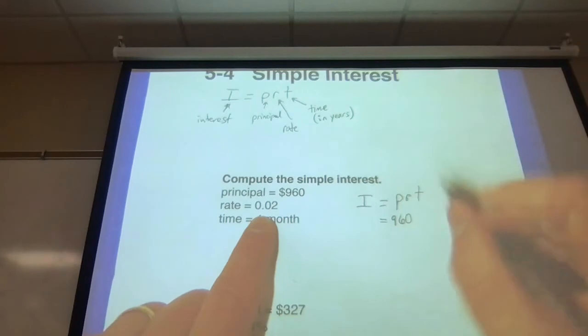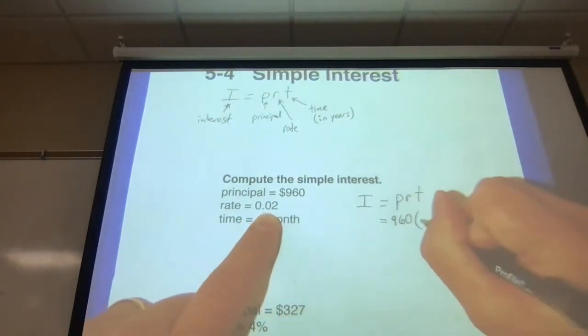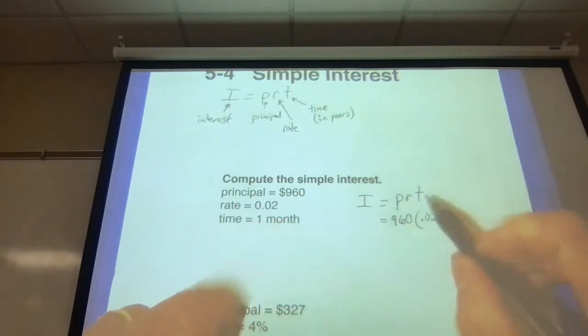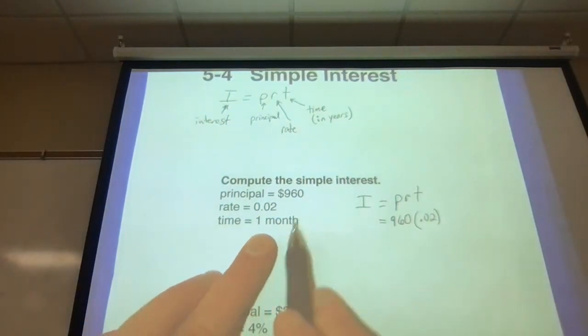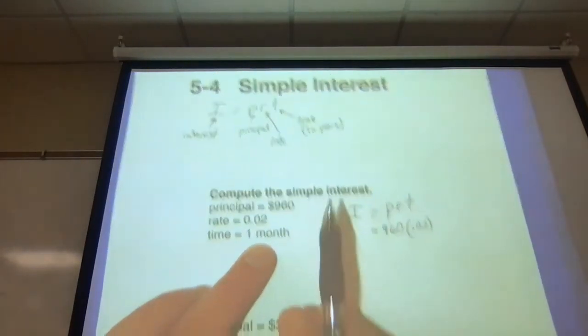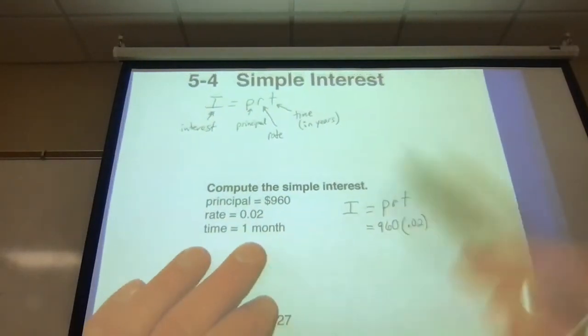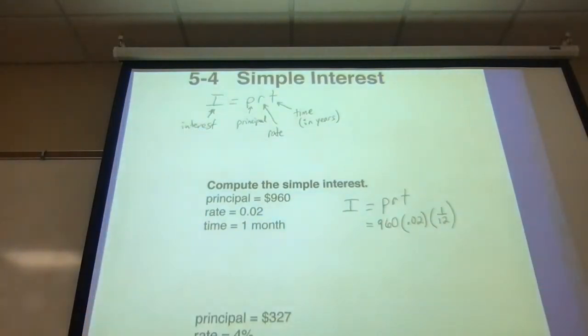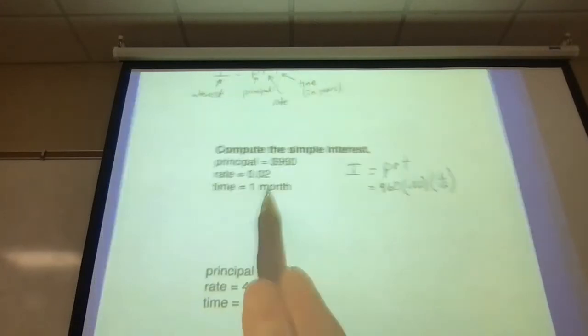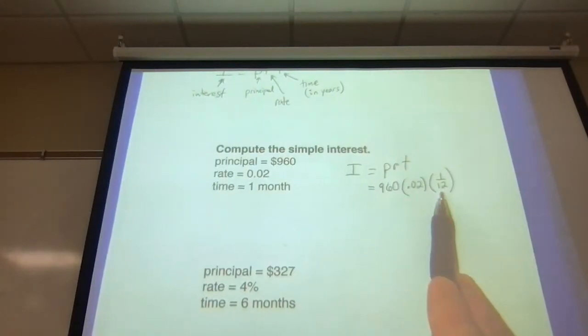R is your interest rate. Your rate here is 2%, which they've written as .02. And T stands for time in years. We have one month. Now we have to take that month and convert it to years. So if you put that as a fraction, one month would be 1/12 of a year because there's 12 months in a year. If they give you months, you have to put it as a fraction for that 12.